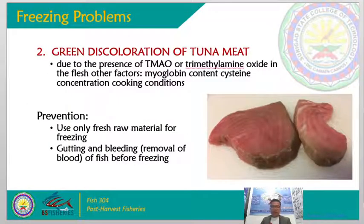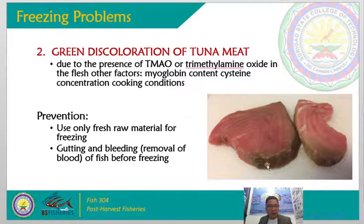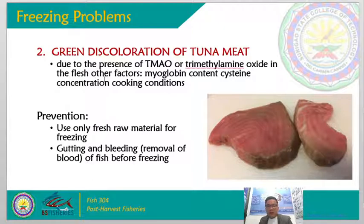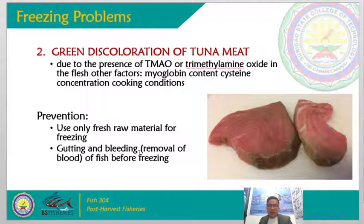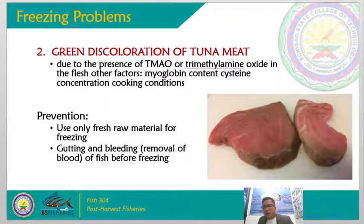Another problem is the green discoloration of tuna. The green color is due to the presence of trimethylamine oxide in the flesh and other factors such as myoglobin content, cysteine concentration, and cooking conditions. To prevent this, use only fresh raw material for freezing, and gutting and bleeding must be done — remove the entrails, gills, and blood — before putting the product in the freezer to prevent green discoloration.